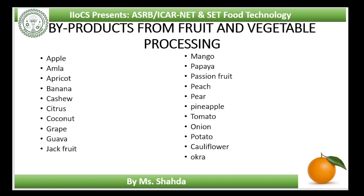Cashew is an important tropical tree crop, mostly grown on the Malabar coast of India, particularly concentrated in Kerala, Karnataka, Maharashtra, Tamil Nadu and Andhra Pradesh. Every part of cashew is useful. The kernels are of high nutritive value, rich in protein, carbohydrate, saturated fats, minerals and vitamins. The main by-products are cashew apple, cashew testa and cashew nut shell liquid. Because of its astringent taste and fibrous texture, only a small quantity of the annual production of cashew apple is consumed locally, and a major portion is wasted.